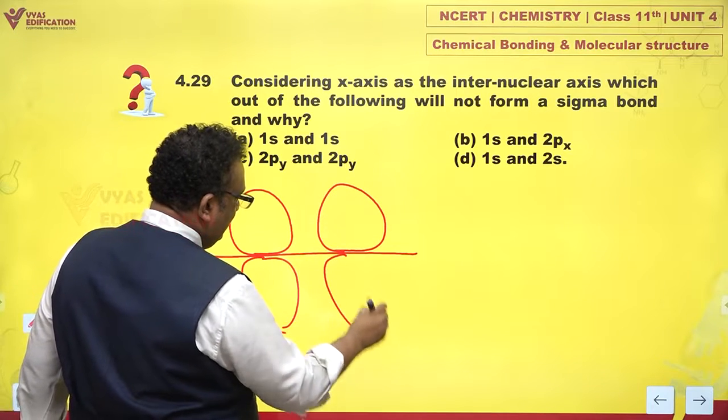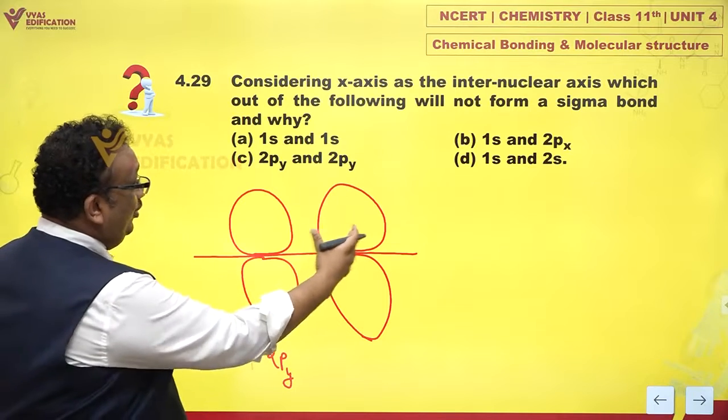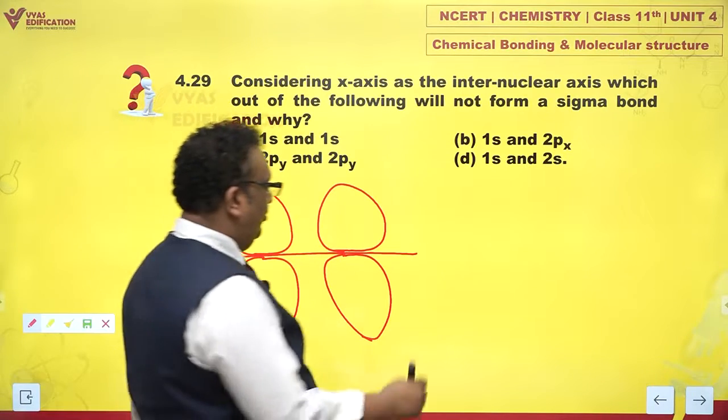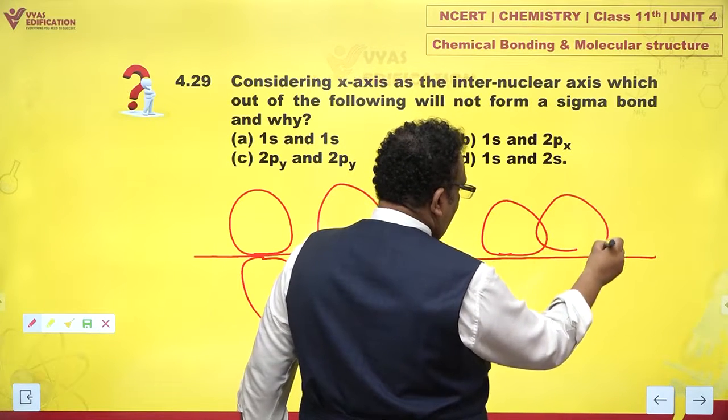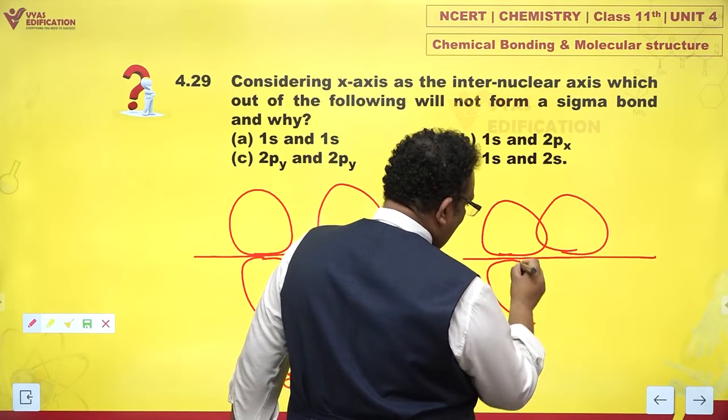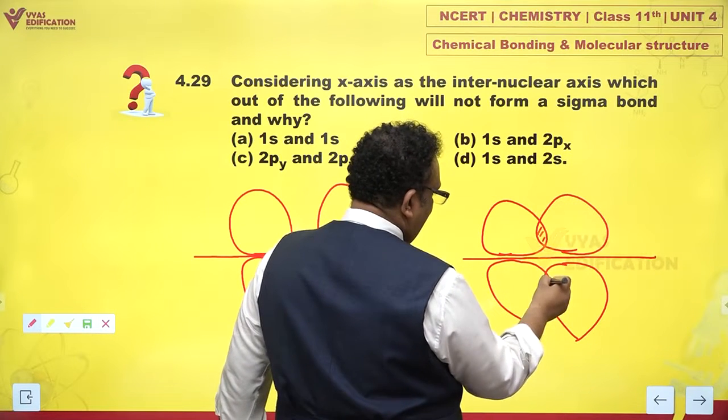And 2py is again like this. And if they are coming close and if they are overlapping, what do I get? I actually get a pi bond. If you just see, I get a pi bond.